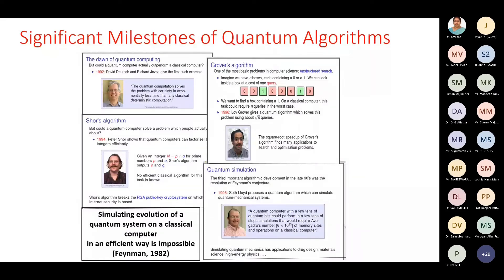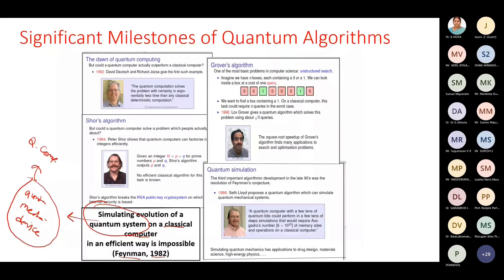Let's look at significant quantum algorithms that gave momentum to quantum computer development. In 1982, Richard Feynman gave the idea that if you want to simulate a quantum system, you should simulate it on a quantum mechanical device — not on a classical computer, which would be inefficient. For larger systems it would not be feasible on classical computers. If you want to simulate a quantum system, go for a quantum mechanical device — a quantum computer. That's why Feynman is called the father of quantum computing.